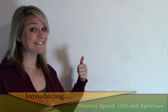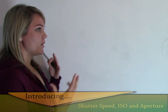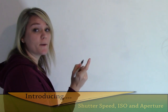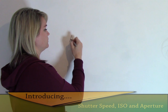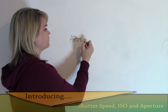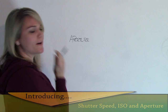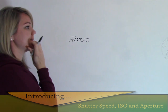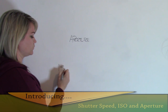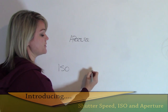So I'm going to draw on the wall. We've got, as I said, three main things. The first one is your aperture. I hope you can read that. The second one is your ISO. And the third one is your shutter speed.